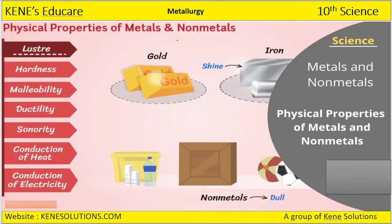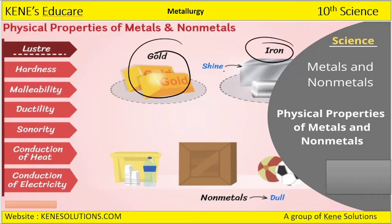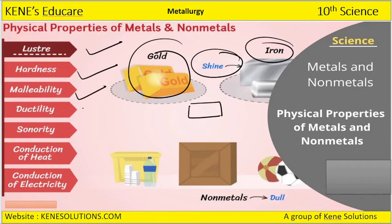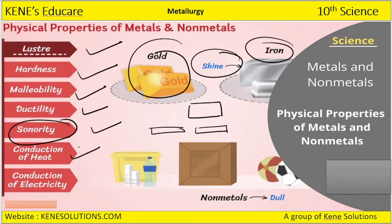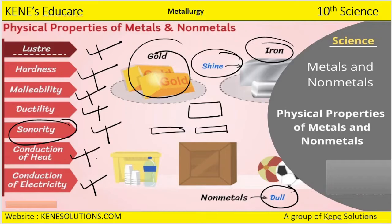Looking at physical properties of metals: metals have luster, shine, and hardness. Exceptional cases for hardness are sodium and lithium. Metals are malleable — can be converted into thin sheets; ductile — can be converted into wires; and sonorous — they make a specific sound when struck. They conduct heat and electricity. Non-metals are generally dull, not hard, not lustrous, not malleable, not ductile, not sonorous, and do not conduct heat or electricity.